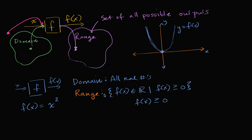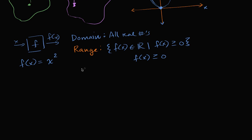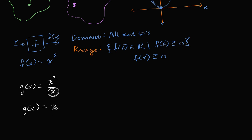Let's do another example to make it a little bit clearer. Let's say I have g of x equal to x squared over x. We could simplify g of x — x squared divided by x is the same as g of x equals x. But we have to be careful: in the domain, x cannot equal zero. If x equals zero, we get zero over zero, which is indeterminate form. So g of x equals x for any x as long as x is not equal to zero. These two function definitions are equivalent.